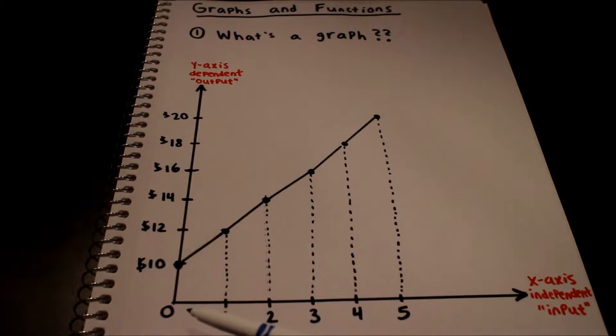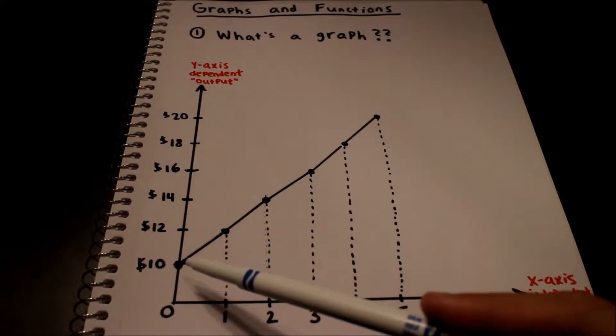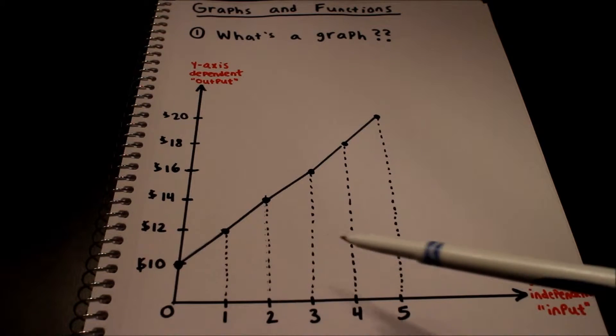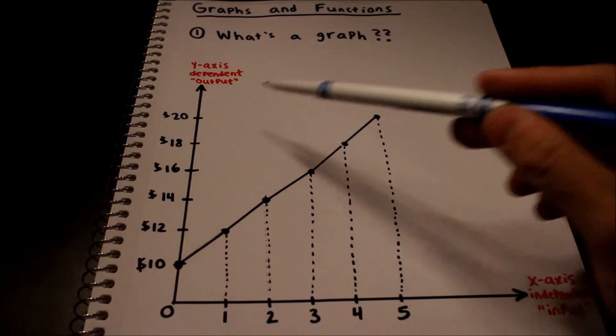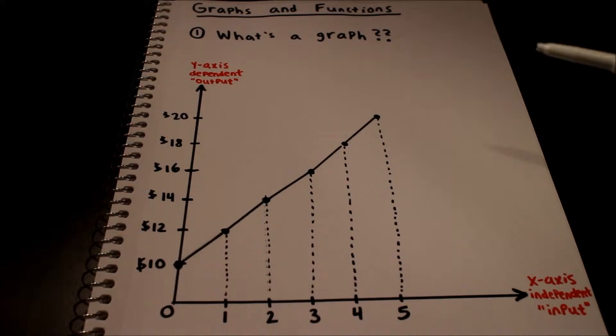So if I look here at zero, if I have a value of zero, the result or my output will be ten dollars. If I skip over to five, my result on the y-axis, my dependent axis, will be twenty dollars. So I just kind of made up this data.